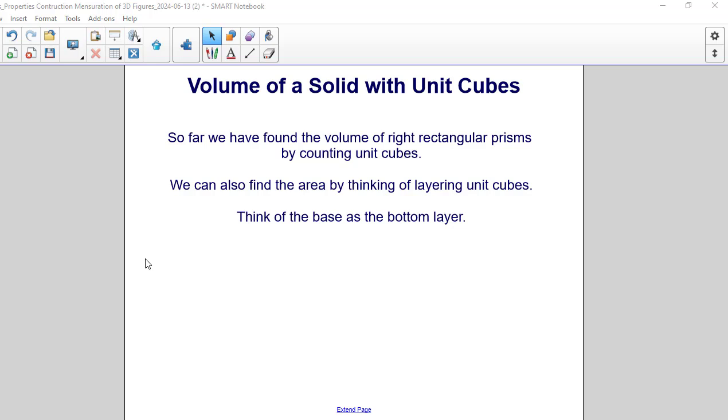So far, we have found the volume of right rectangular prisms by counting unit cubes. You can also find the area by thinking of layering unit cubes. Think of the base as the bottom layer.